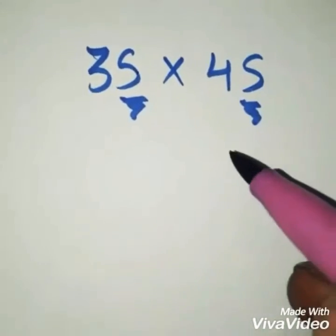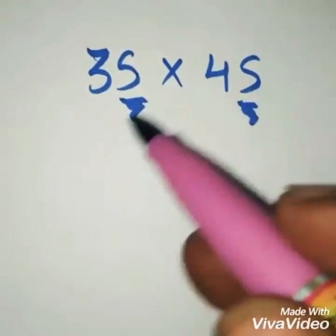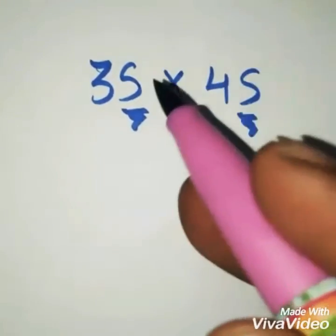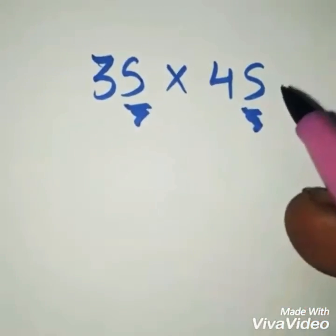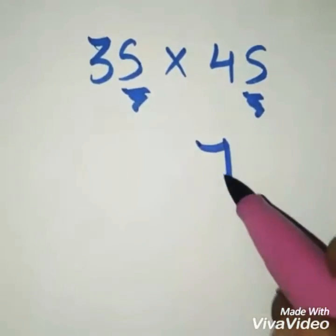Simply, what you have to do whenever you multiply numbers with a difference of 10 containing 5 as the unit place is write down 75.